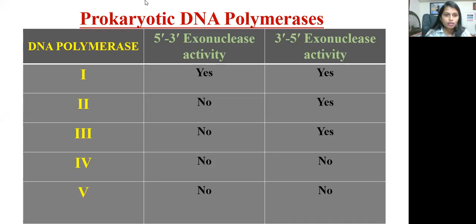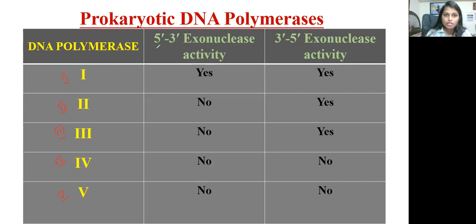So this is about prokaryotic DNA polymerases and their activity. There are five types of DNA polymerases present in prokaryotes: DNA polymerase one, two, three, four, and five. When it comes to activity, there is three prime to five prime and also five prime to three prime exonuclease activity. The five prime to three prime exonuclease activity is usually for primer removal, and the three prime to five prime exonuclease activity is usually for proofreading activity.